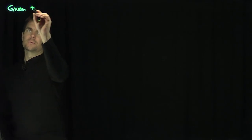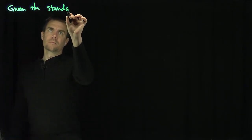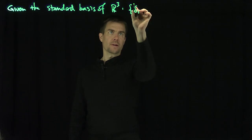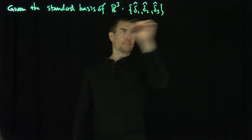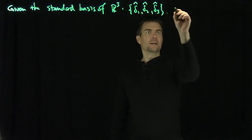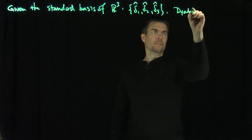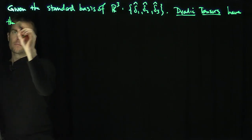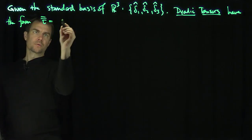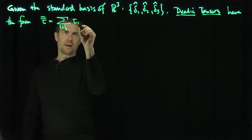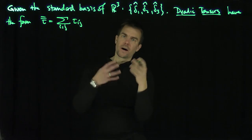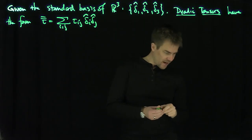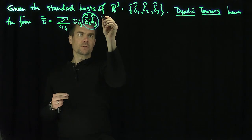Let's be given the standard basis of R3. We've been using our delta notation, so I'm going to call it delta-1-hat, delta-2-hat, delta-3-hat for i, j, and k. Then we can form our dyadic tensors. Our dyadic tensors have the form tau-bar-bar, which is the sum over i and j of tau_ij and then the outer product of delta_i and delta_j. Those are the unit dyads — the unit dyadic vectors.